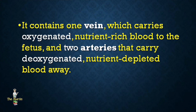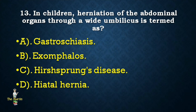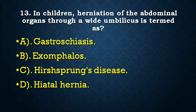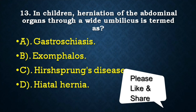Next question: In children, herniation of abdominal organs through a wide umbilical defect is termed as — gastroschisis, exomphalos, Hirschsprung disease, or hiatal hernia? Correct answer is exomphalos.